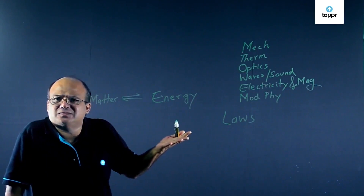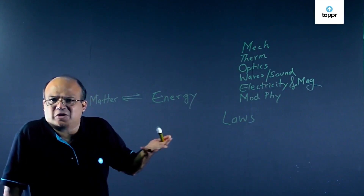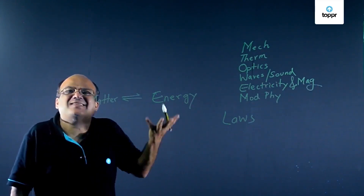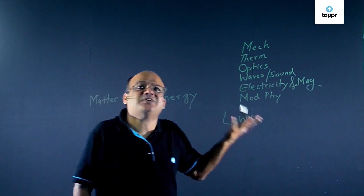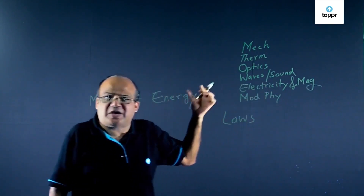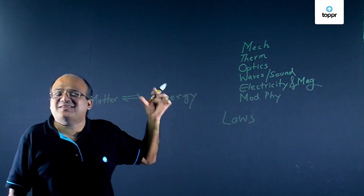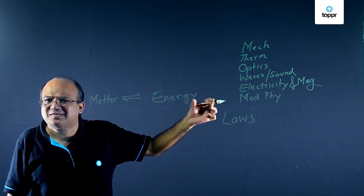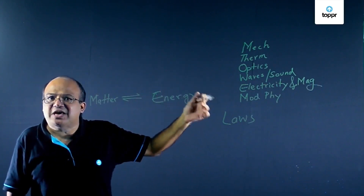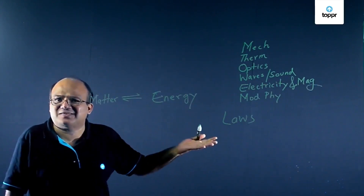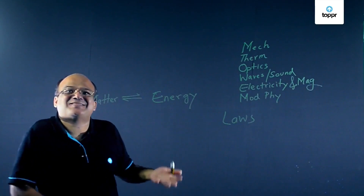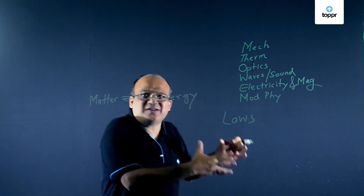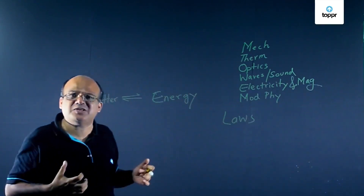What is a unit? A unit is a standard of measurement. The unit of mass is kg — that is the standard for measuring mass. The unit of length is meters — that is the standard for measuring length. So a unit is the standard of measurement.